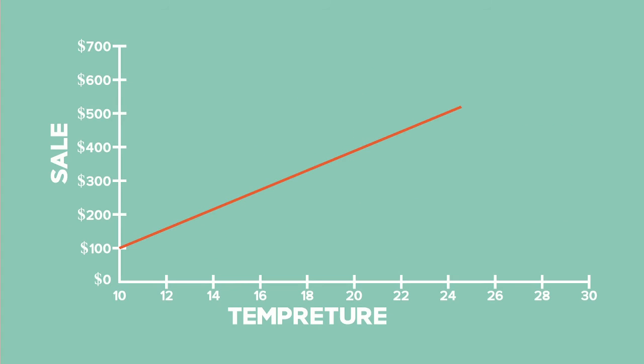Given the graph of sales versus temperature, using linear interpolation, we can estimate the sales at 21 degrees Celsius, which is a value within the data range, to be $480.